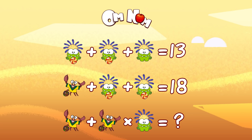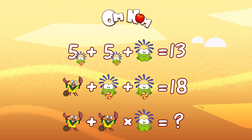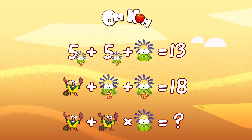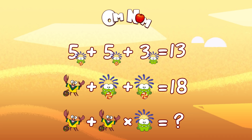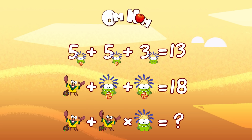So two Om Noms with candy are the same. Let's try five — five plus five is ten, plus Om Nom without candy equals 13. That means 13 minus 10 equals 3, so Om Nom without candy is 3. Let's check one more time to make sure we're on the right track: five plus five plus three equals 13. Looks perfect!